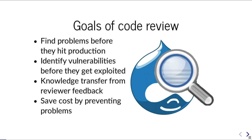Usually code review is done in pull requests — that happens a lot on GitHub. We also have the patch system on Drupal.org. The goal is one developer writes the code and a peer reviews it and makes it better. All changes to Drupal core, for example, are peer reviewed before a change goes in: another contributor approves it and then it gets committed by a core committer.